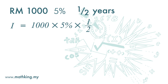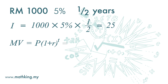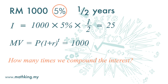For compounding, the matured value is principal times one plus interest rate to the power of time period. The principal is one thousand. However, we cannot just use five percent here, because five percent is for one year. There is a question of how many times we do the compounding.